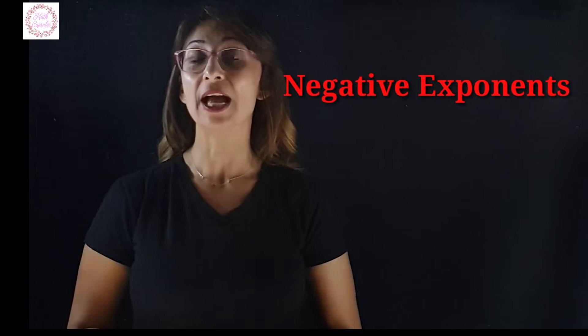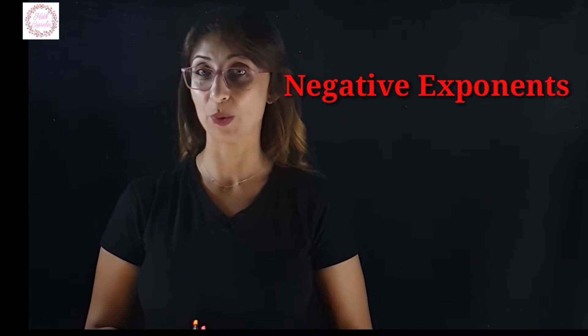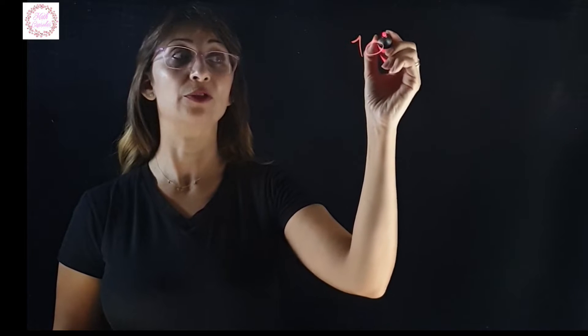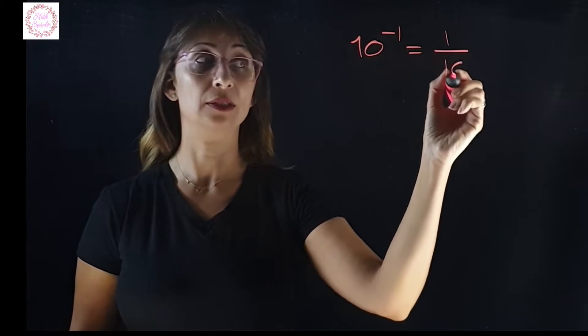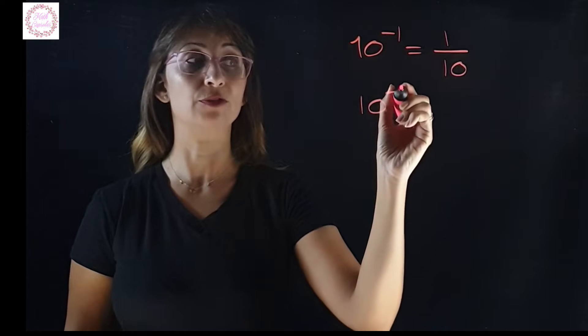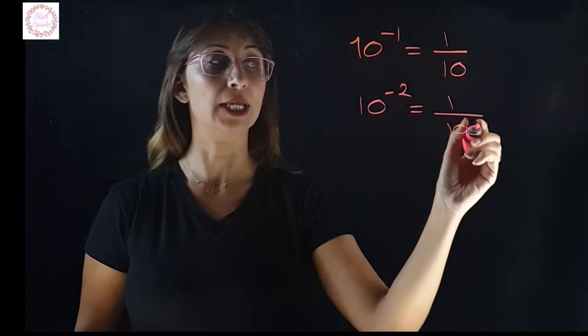Welcome back. In this new video about exponents, we'll talk about negative exponents and how to simplify expressions containing exponents. First of all, what is a negative exponent? Remember in scientific notation, if we have 10 to the power of negative 1, this means it's 1 over 10. And if we have 10 to the power of negative 2, this means it's 1 over 100.